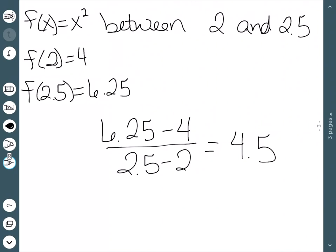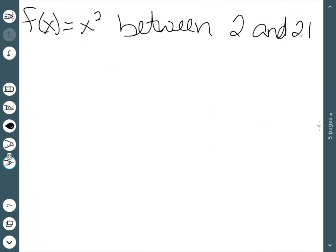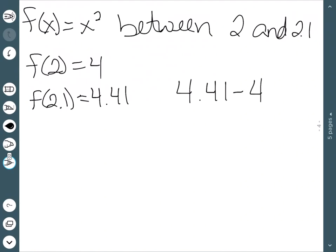Let's do one more. Here we have f(x) equal to x squared between 2 and 2.1. We still know that f(2) is 2, and f(2.1) is going to be 4.41. Sorry, f(2) is 4. So now we have 4.41 minus 4 all over 2.1 minus 2, which gives us 4.1.